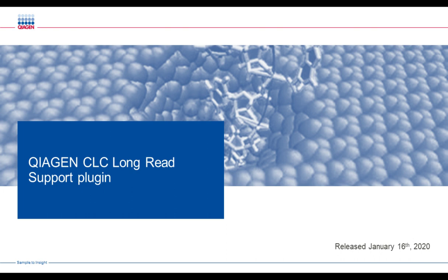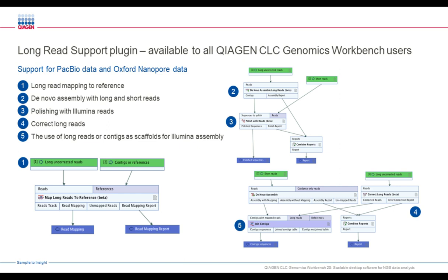In January, just a month ago, we released the CLC Long-Read Support Plugin. This is a new plugin targeting PacBio and Oxford Nanopore users. You can map long reads to reference, de novo assemble with long and short reads, polish with Illumina reads, correct long reads, and use long reads as scaffolds for Illumina assembly. These five tools come as part of this plugin and can be used in workflows.